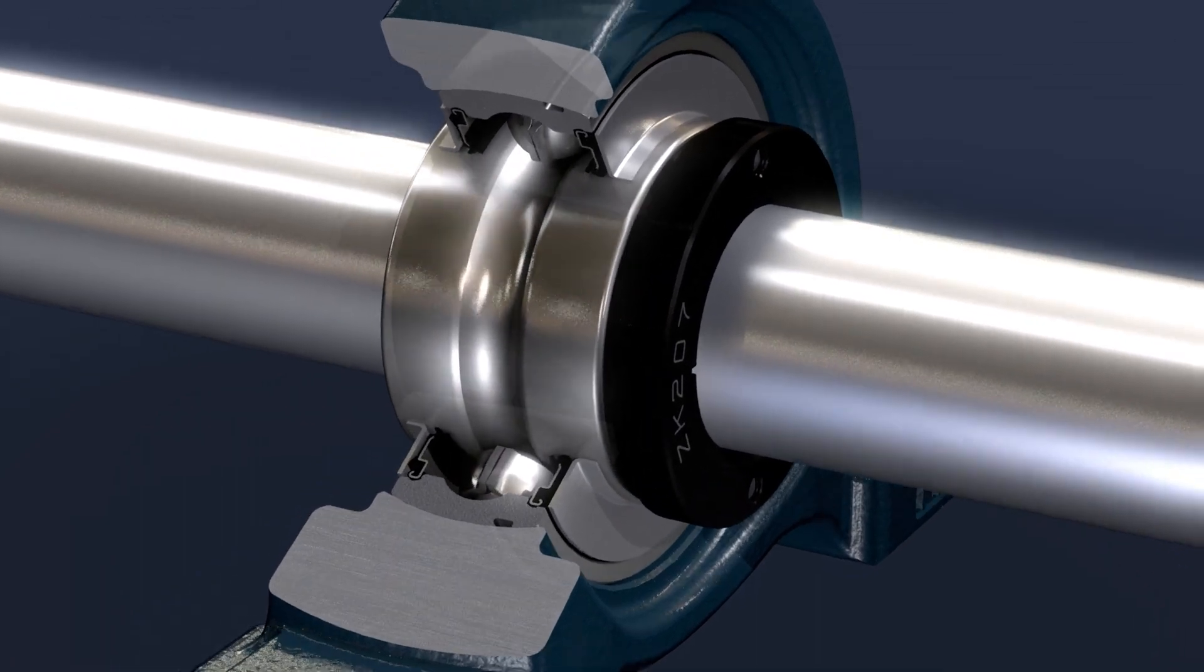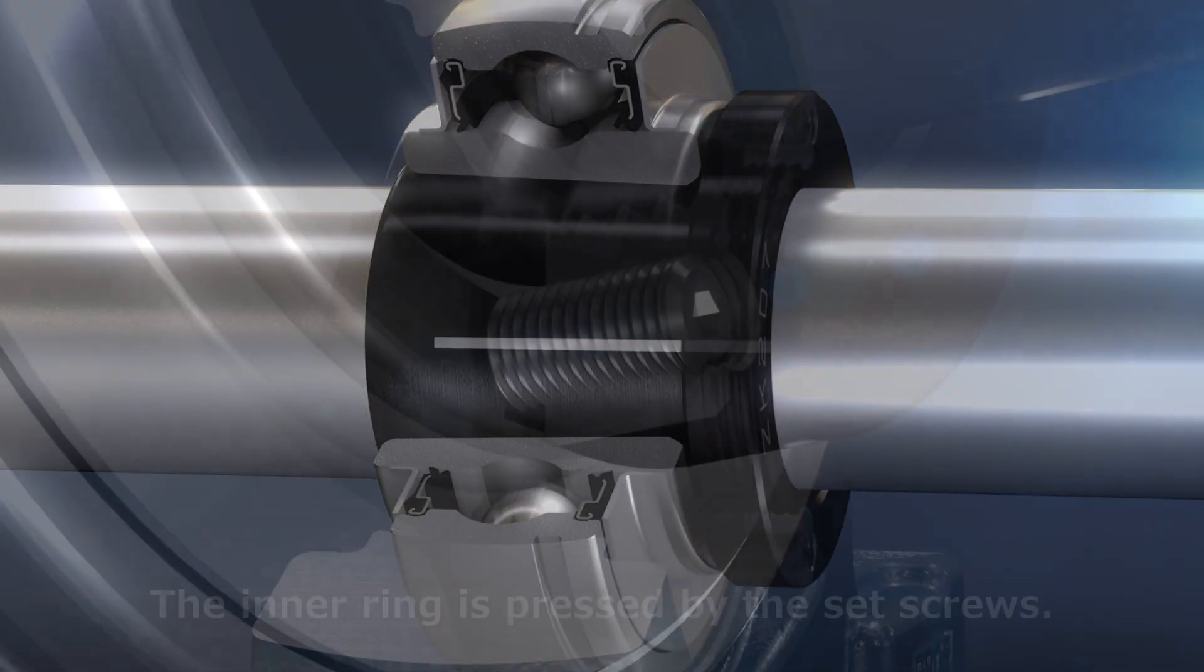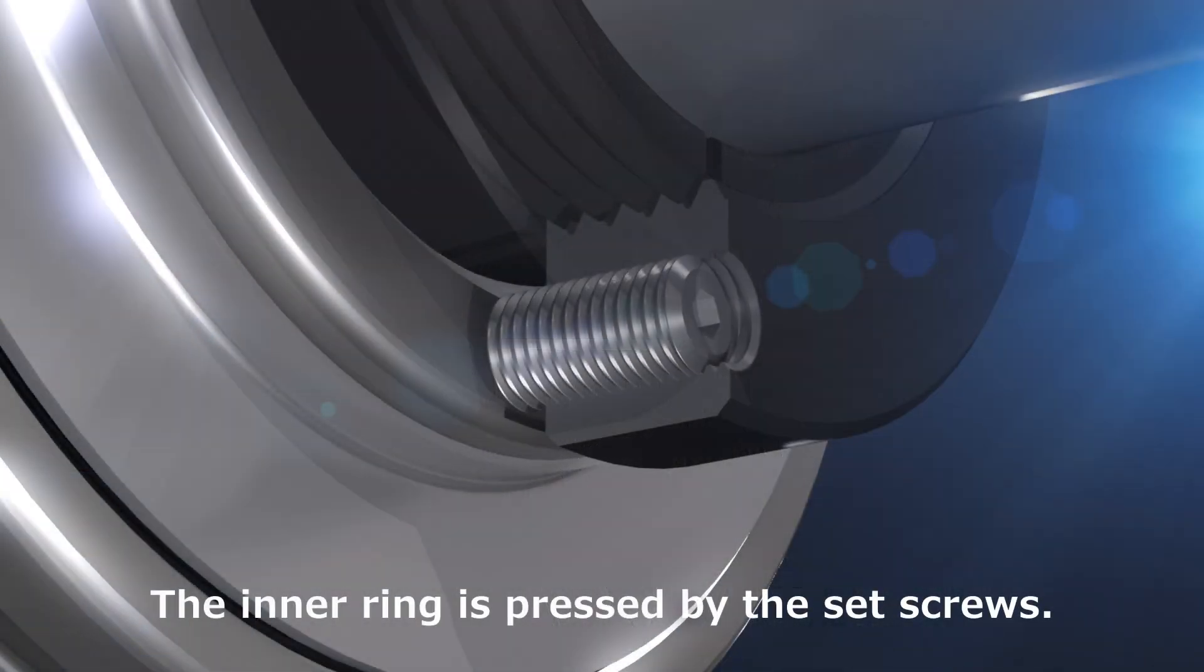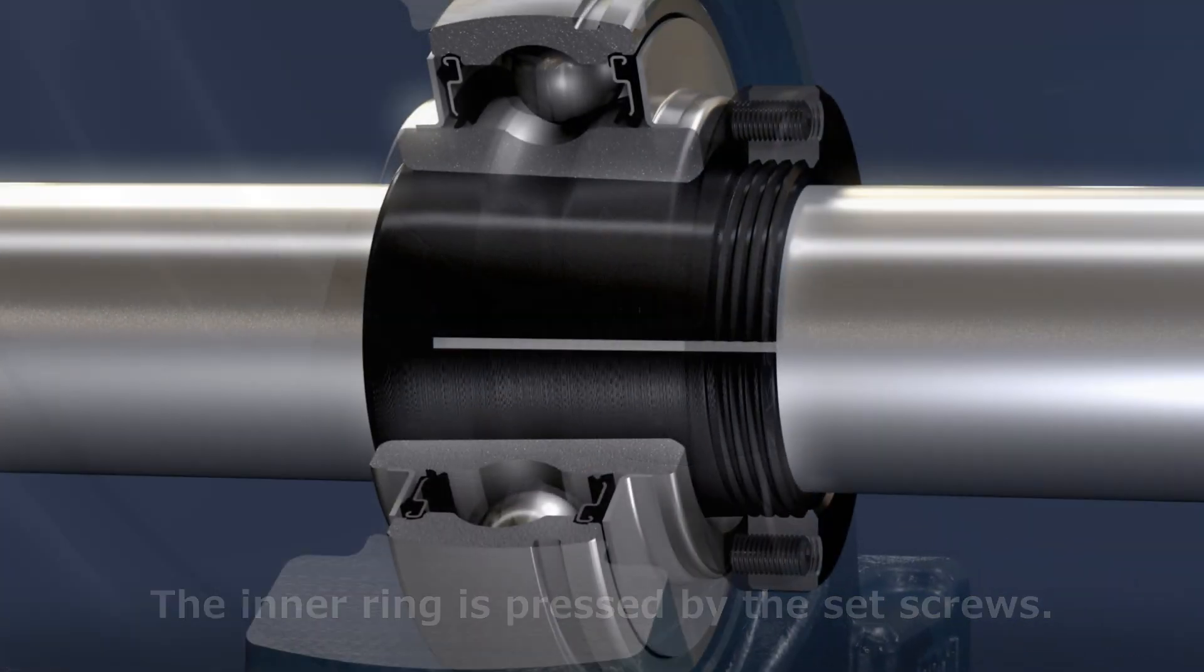The set screws press the inner ring, and Z-Lock sleeve is pulled. The four-slit Z-Lock sleeve holds the shaft concentrically with great holding power, and doesn't affect the bearing clearance at all.